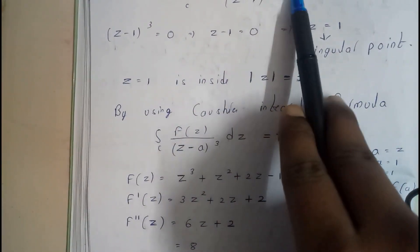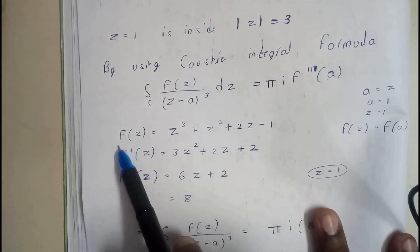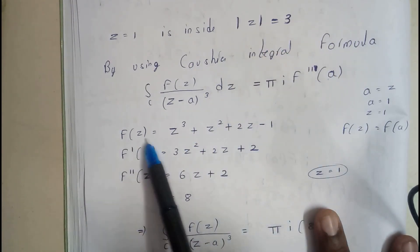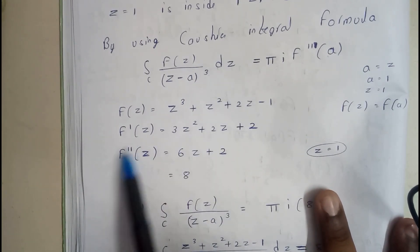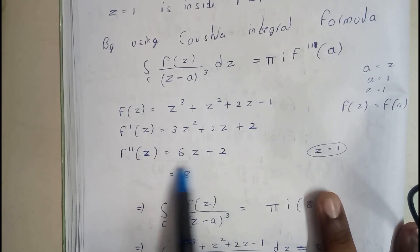This numerator part is f(a). So f(z), a is equal to z, okay that's fine. f(z) = z³ + z² + 2z - 1. So we got this value, so we'll be finding f'(z) again, so we'll be finding f''(z).